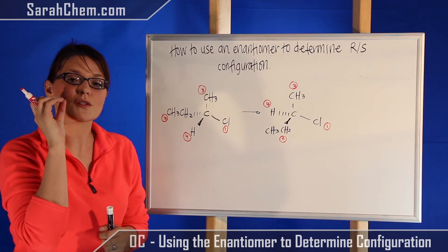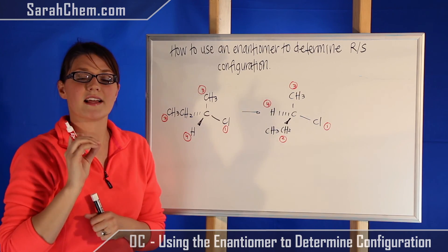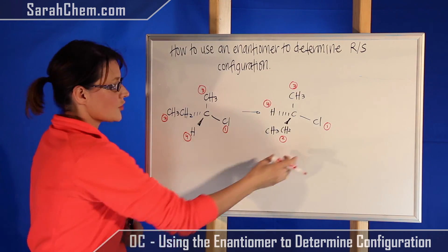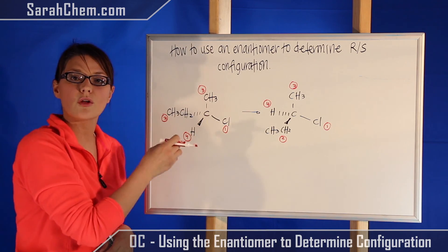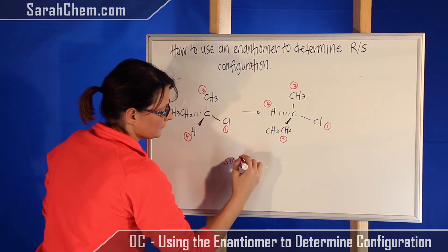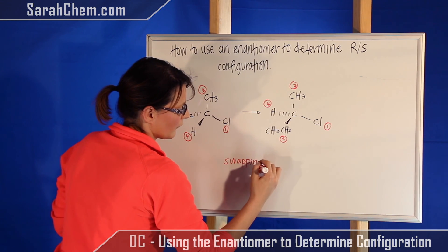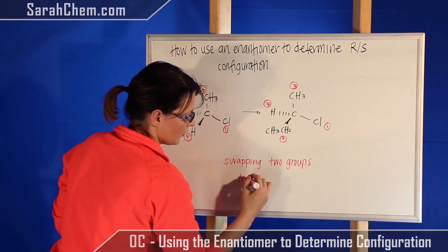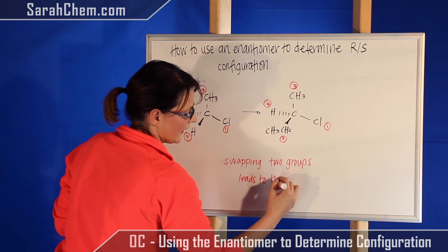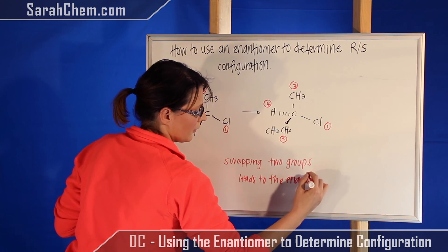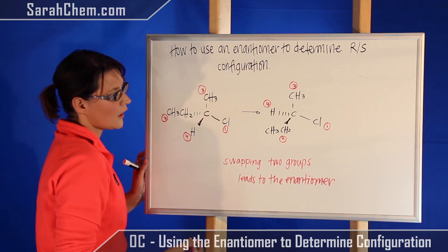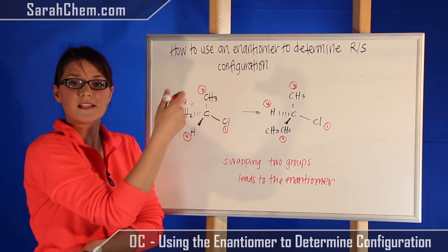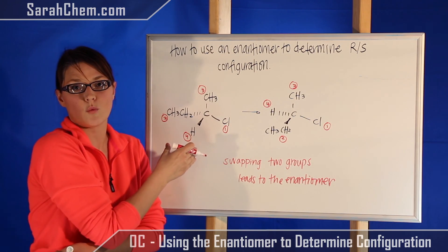Now the most important thing for you to understand is that if you switch two groups you create the enantiomer. So this here is the enantiomer of the original compound. Swapping two groups leads to the enantiomer. So whatever configuration we figure out for this molecule, the opposite configuration will be what the first compound was.